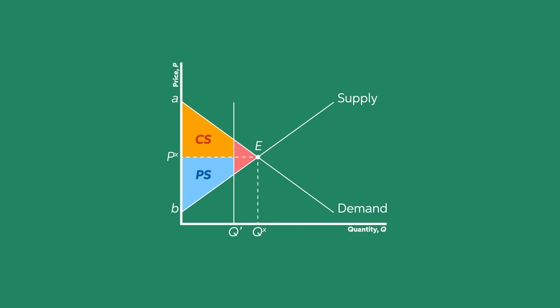If the quantity exchanged is higher, say Q double prime, then for the last few units produced, the marginal cost of production would be too high than what the consumers are willing to pay, a negative surplus. The corresponding decrease to the social surplus is equal to the yellow shaded area.